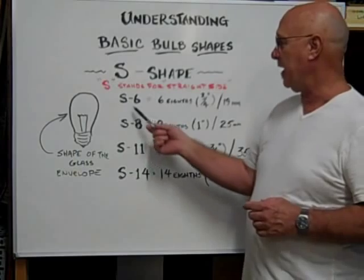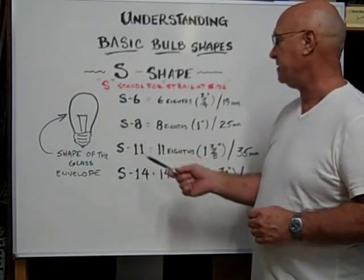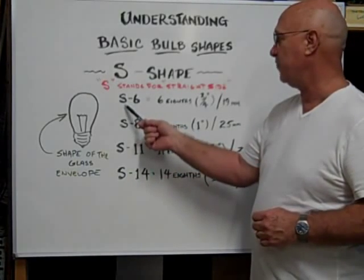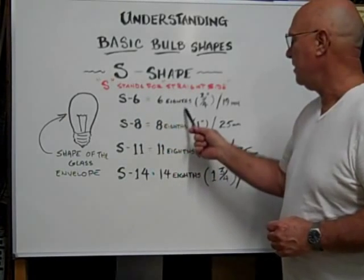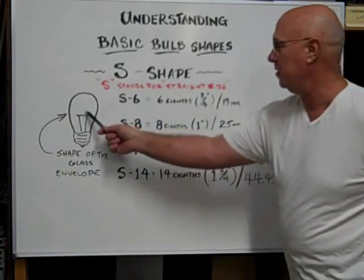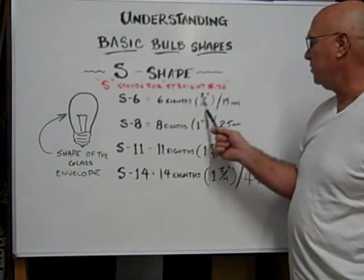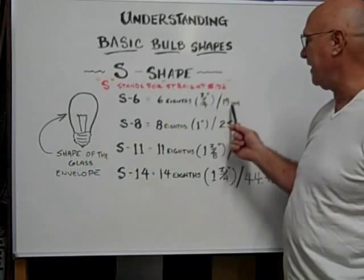Now the first bulb we look at is an S-6. The S stands for straight side, 6 eighths of an inch in diameter, which is equivalent to 3 quarter inches or 19 millimeters.